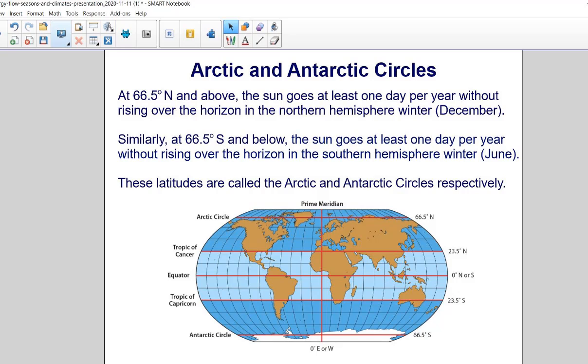Similarly, at 66.5 degrees south and below, the Sun goes at least one day per year without rising over the horizon in the southern hemisphere winter, June.